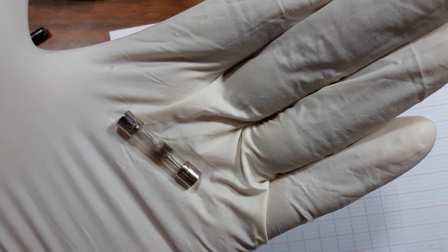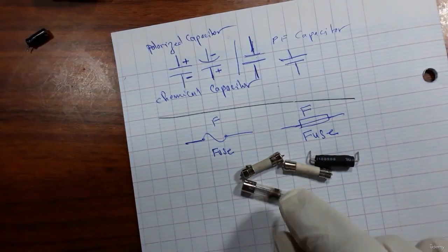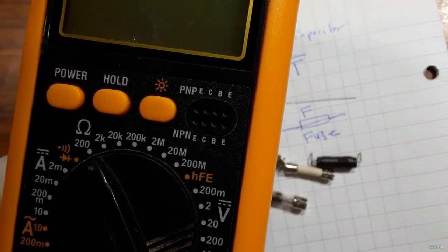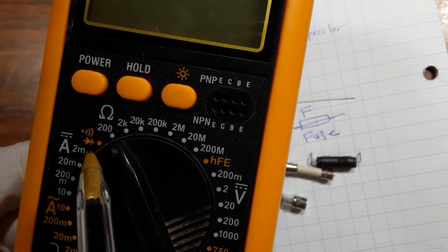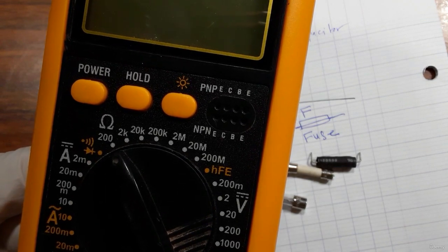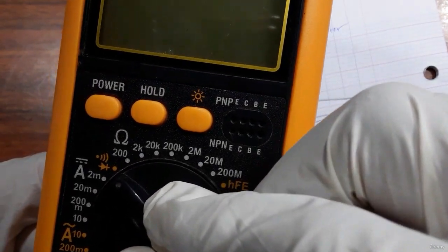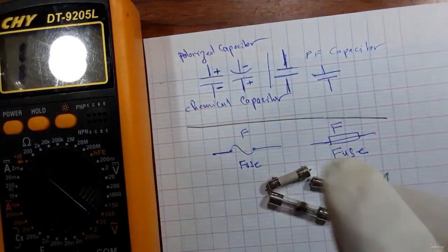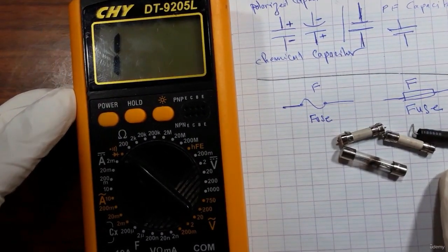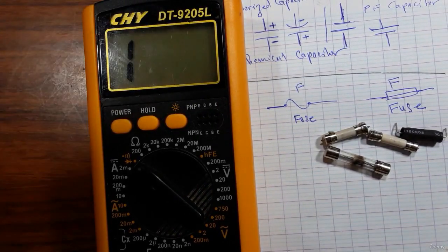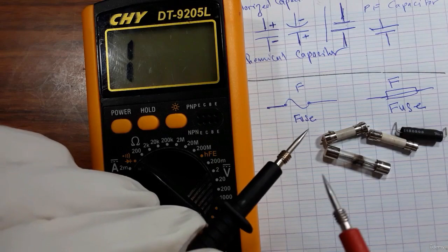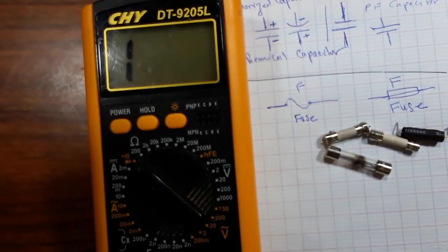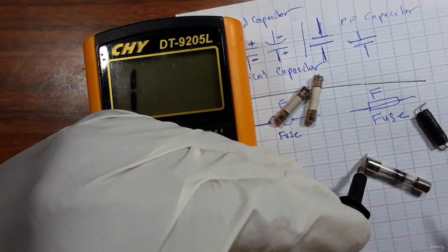So let's use the multimeter and check it. To check the fuse using the multimeter, you should first put the multimeter to the buzzer option, as you see here. So let's put the multimeter to the buzzer option and press the power button. This is the black probe for the multimeter and this is the red probe.